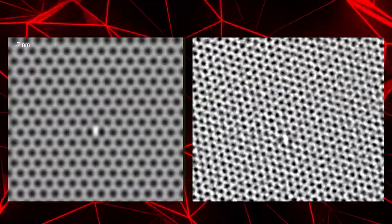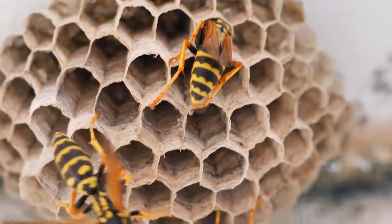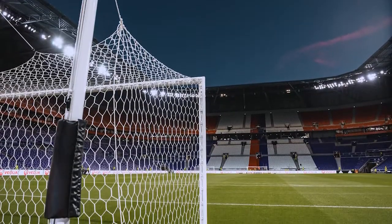The carbon atoms in it are connected in a hexagonal lattice, just like a honeycomb, or like a woven net at a football gate.